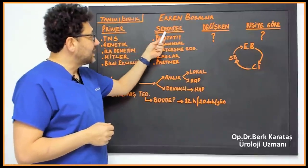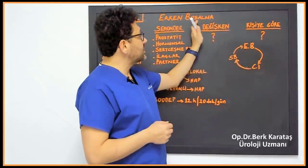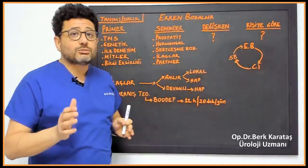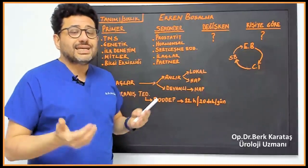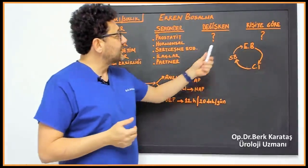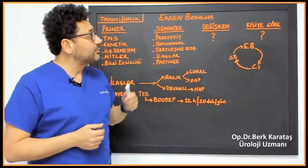Primary premature ejaculation, secondary premature ejaculation, variable, and premature ejaculation according to the person. We don't actually count the next part as a disease and premature ejaculation. We just give them some information.